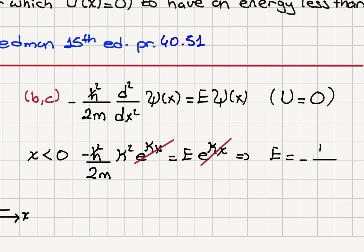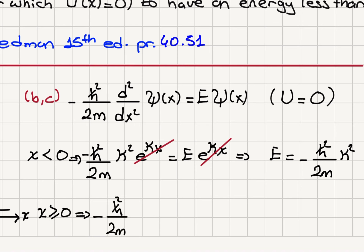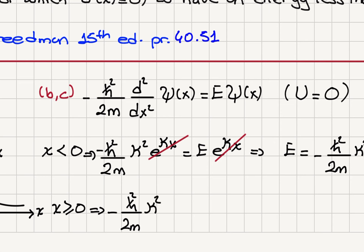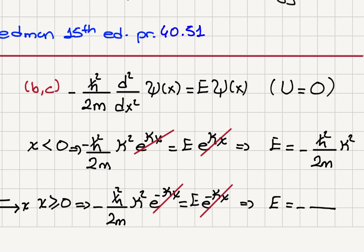Now for x greater than or equal to zero, the Schrödinger equation gives minus h-bar squared divided by 2m times the second derivative. The derivative of e to the minus kappa x gives minus kappa for the first derivative, and another minus kappa for the second derivative, yielding kappa squared times e to the minus kappa x, which equals energy times e to the minus kappa x. The exponential terms cancel again, leaving the same energy.